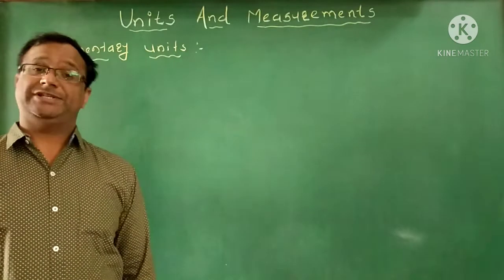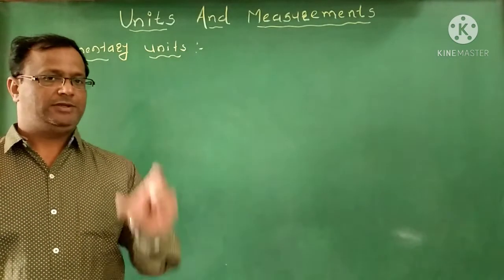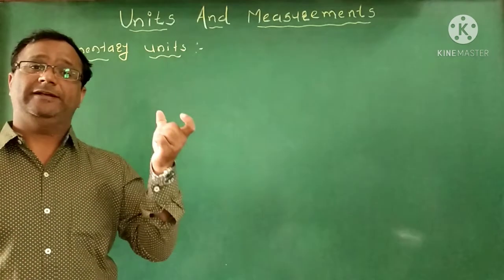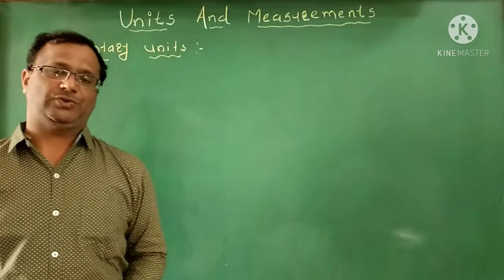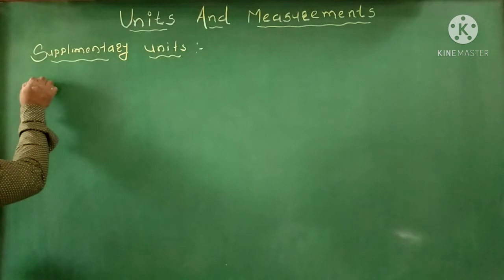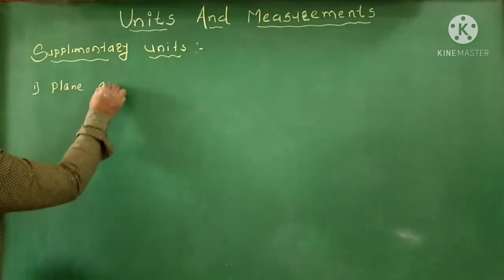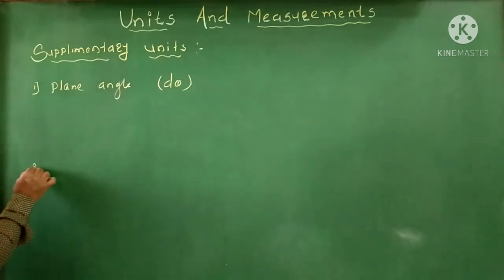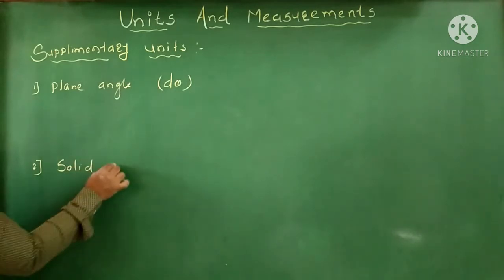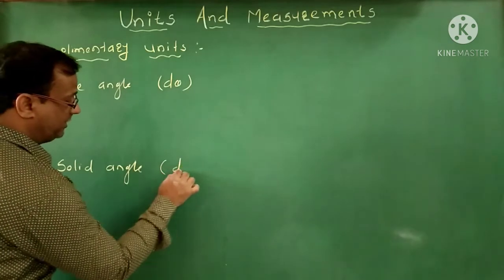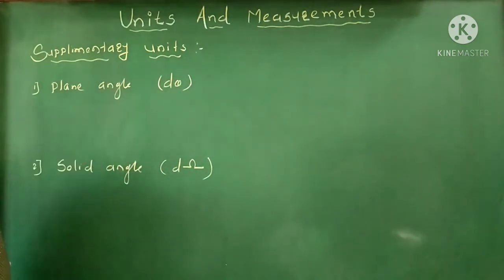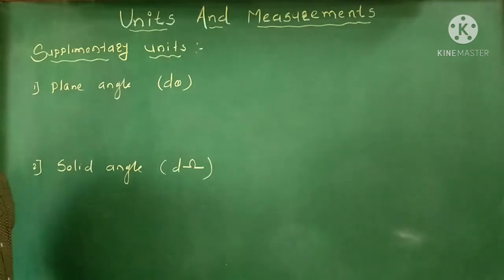This is about the fundamental physical quantity. Beside the seven fundamental quantities, we also get supplementary quantities. The first supplementary quantity is the plane angle, represented by dθ, and the second is the solid angle, represented by dρ. These are the two supplementary physical quantities.